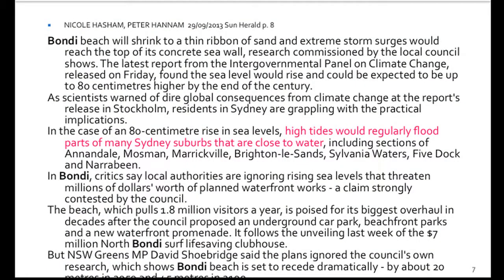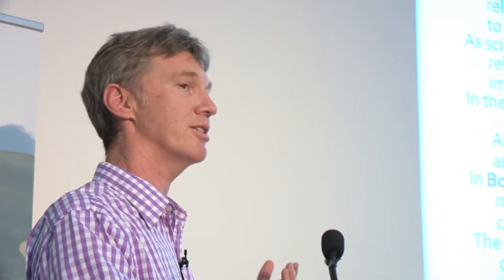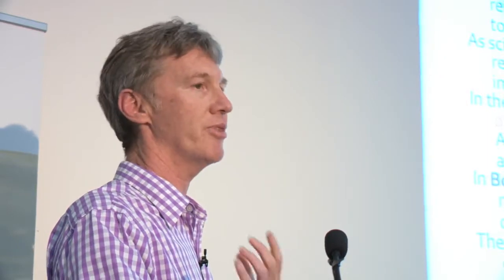A very recent example — end of September this year — in response to the IPCC's recent report, looking at an 80-centimetre rise in sea levels. High tides would regularly flood parts of many Sydney suburbs close to water, and not just coastal suburbs. Annandale and Marrickville, for example, are not on the coast — they're low-lying, on Sydney Harbour or susceptible to flooding via the Cooks River. Bondi Beach will shrink to a thin ribbon of sand and extreme storm surges would reach the top of the concrete seawall. All past decisions about where to place the seawall and its appropriate height are based on previous understandings that don't take into account the push of climate change.